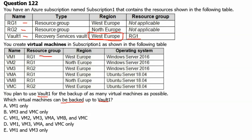VM1 is residing in West Europe — that's number one. VM3 is also residing in West Europe, so we can take the backup of this. VMA is residing in West Europe, so we can take the backup of this as well. And VMC is residing in West Europe. So there are four virtual machines we can back up to the recovery service vault. Therefore option D is the correct answer.